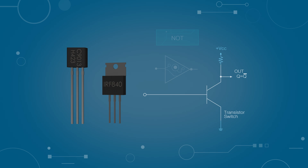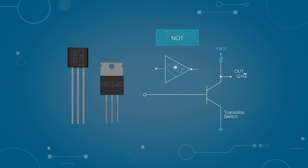CPUs are made from semiconductors called transistors. First, let's look into how transistors work.